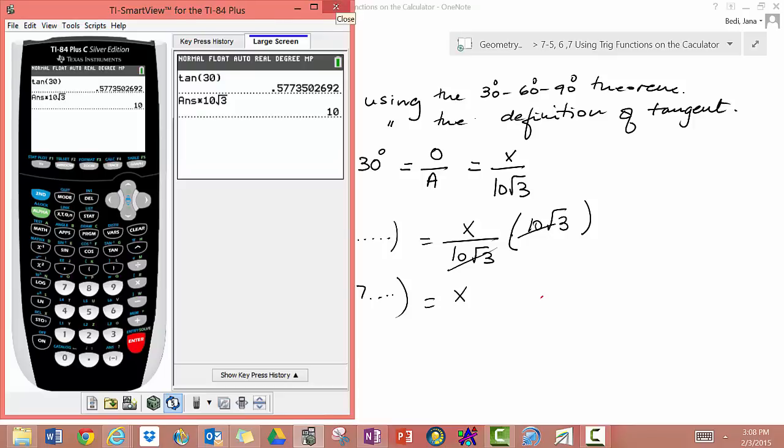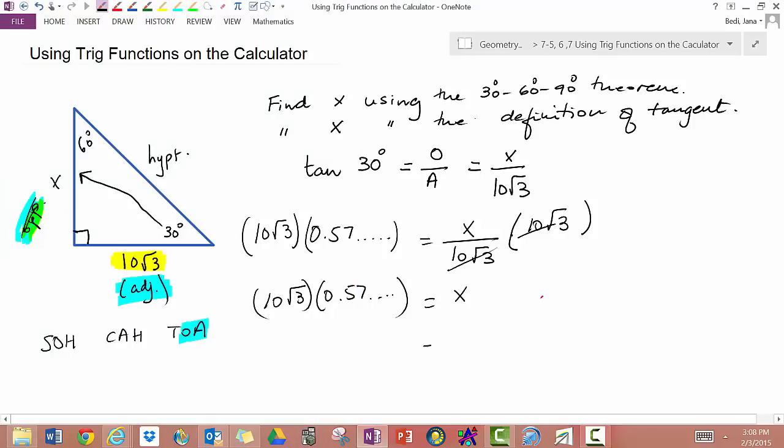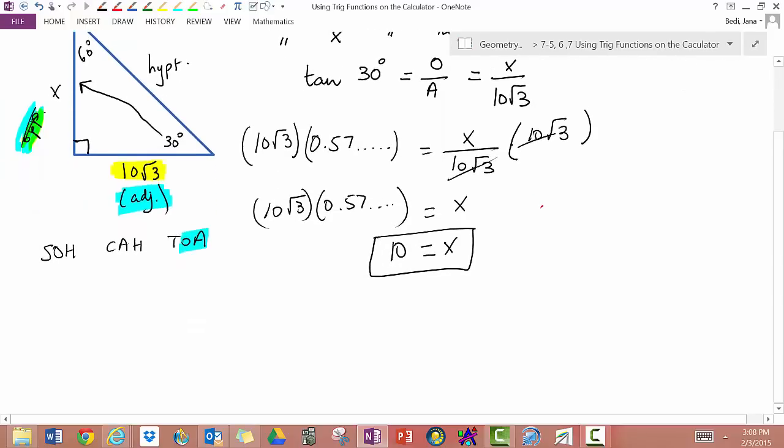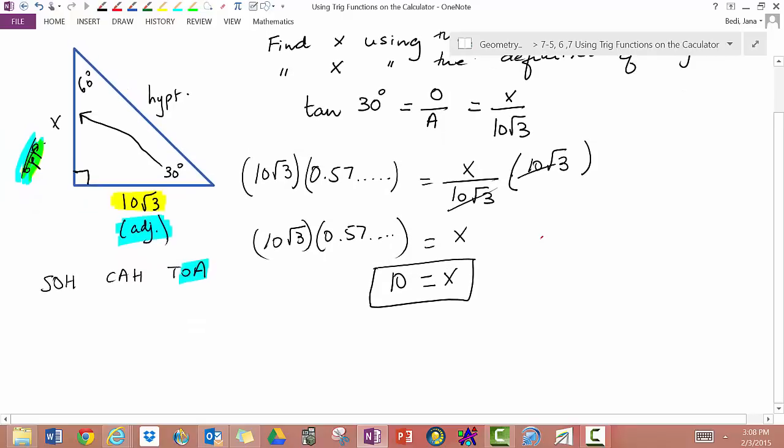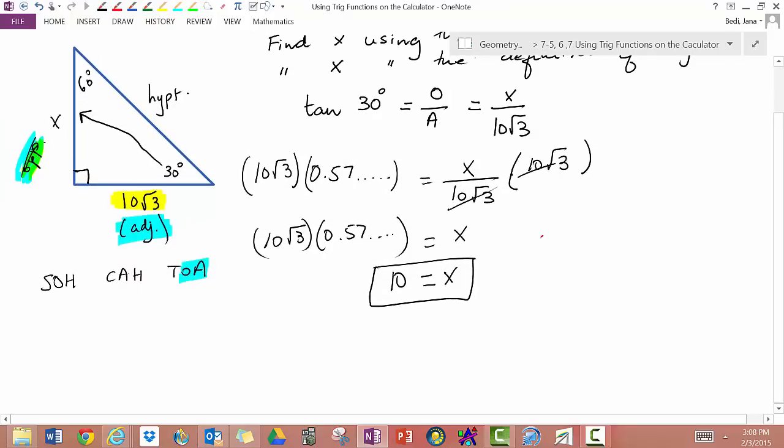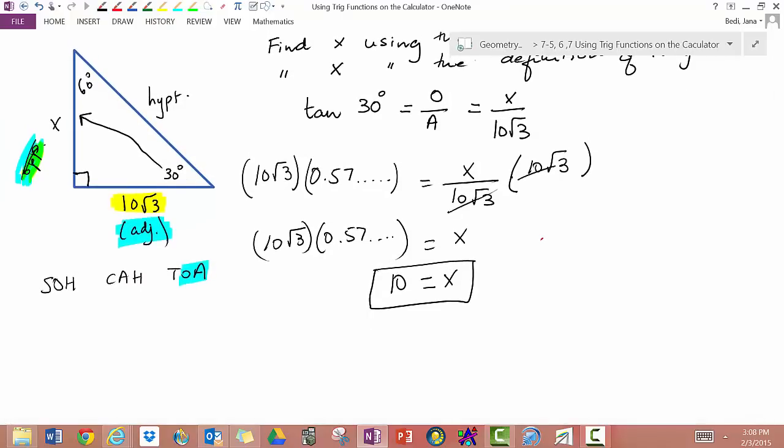So x is equal to 10. This is using tangent. Let's see if this works out using our special triangles, the 30-60-90 theorem.